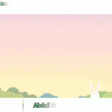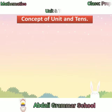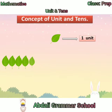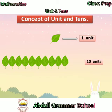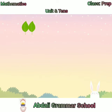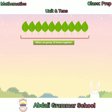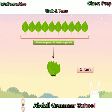Mathematics concept of unit and tens. One leaf means one unit: one, two, three, four, five, six, seven, eight, nine. Ten leaves means ten units: one, two, three, four, five, six, seven, eight, nine, ten. So when we group ten leaves together, we get one ten.